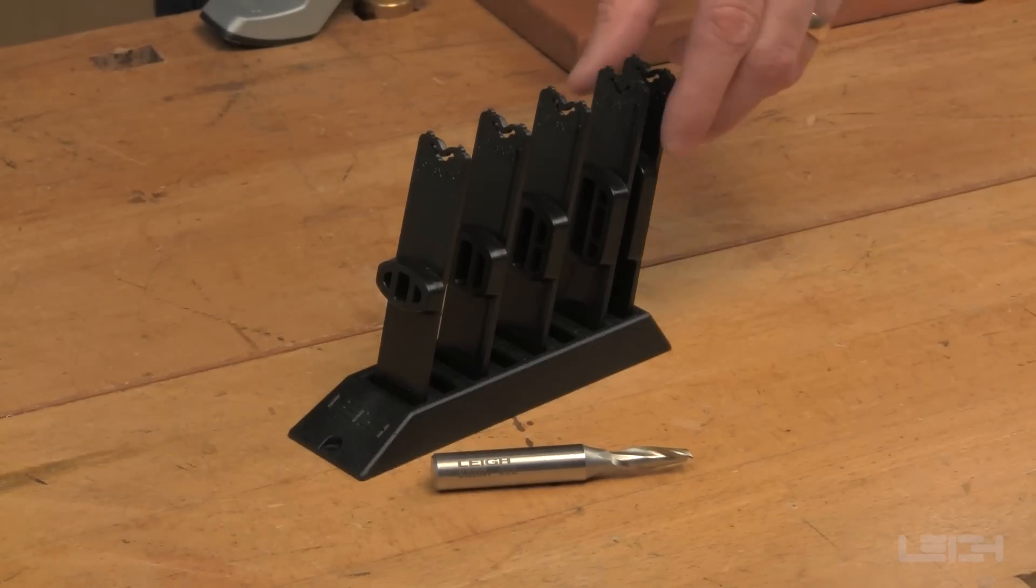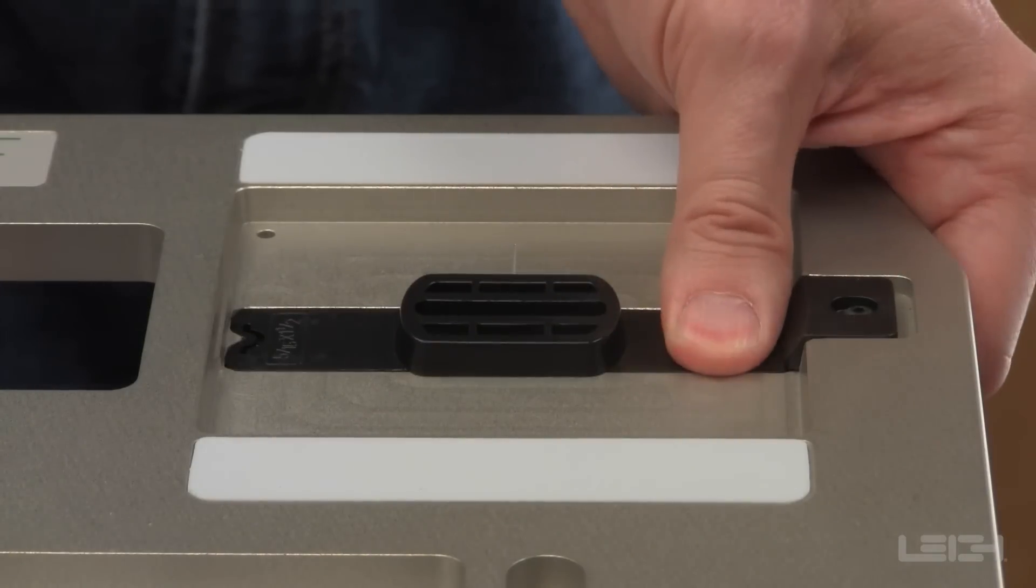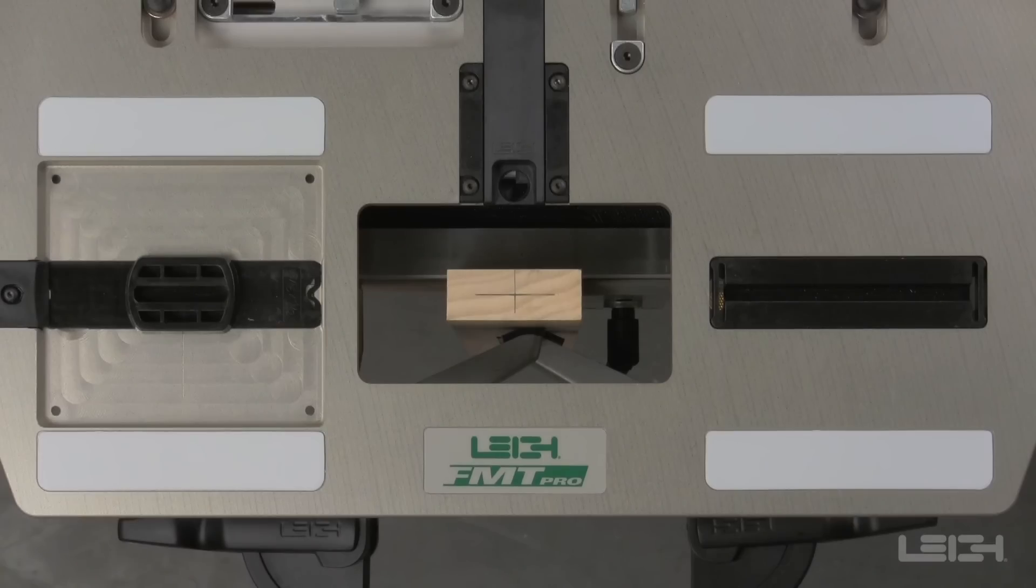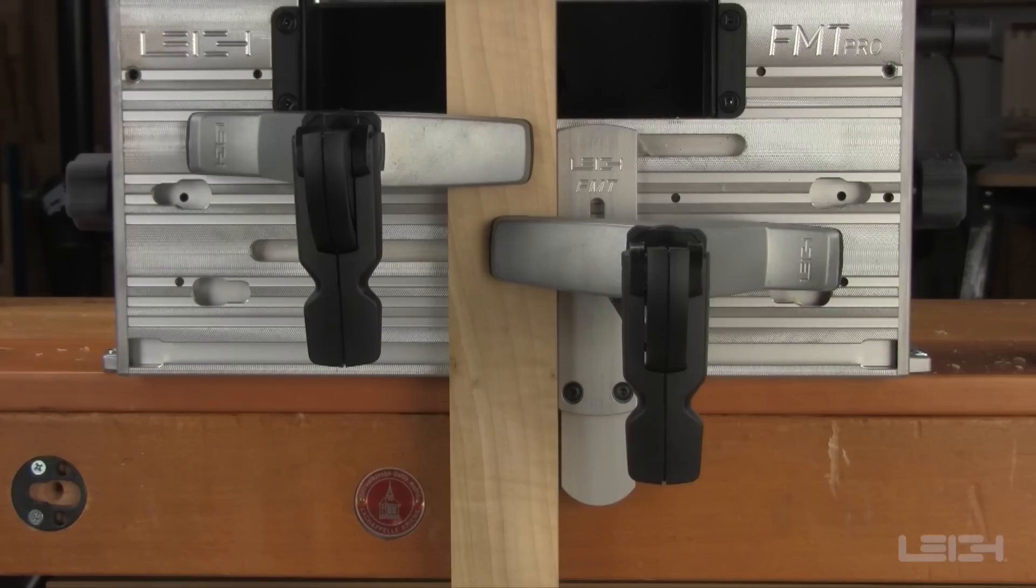Select a guide that matches the size of mortise and tenon you want and insert it in the guide recess. The FMT Pro is now setup to route both the tenons and the mortises.